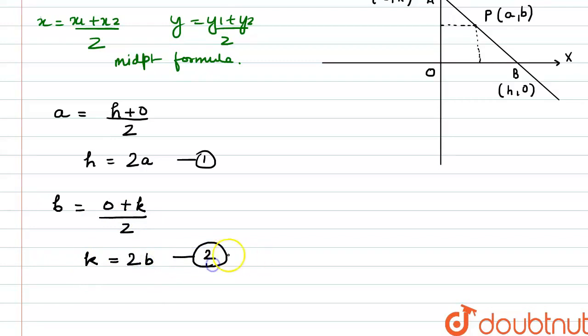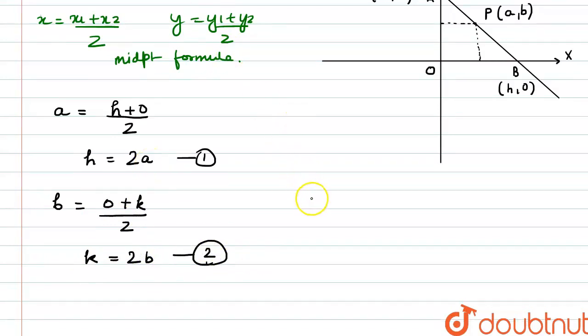This is our second equation now, so then here we get our points A as 0 comma 2b and our point B as 2a comma 0.